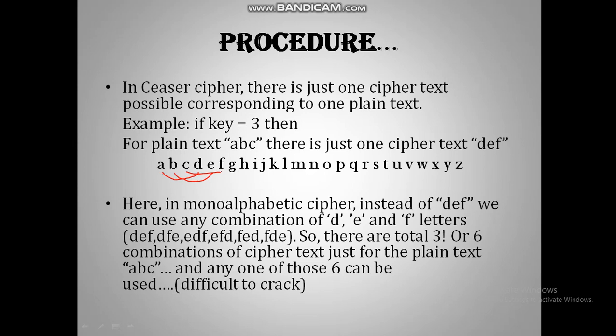While in mono-alphabetic ciphers, not only DEF but also any combination of the letters used to construct the cipher text — here D, E, and F — can be used. There are 3 letters in the cipher text, so the number of combinations possible will be 3 factorial, or 6 combinations: DEF, DFE, EDF, EFD, FED, and FDE. So instead of DEF, any of the other 6 combinations can also be used to make up the cipher text, making it all the more difficult to crack.